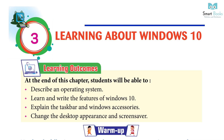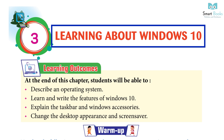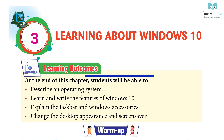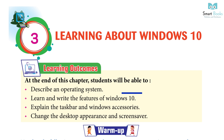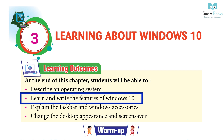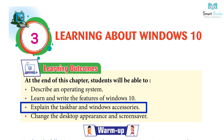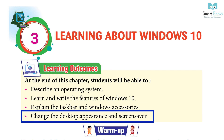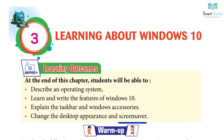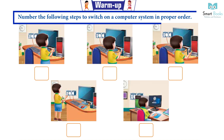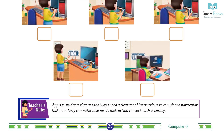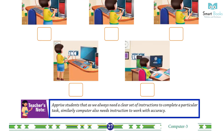Chapter 3: Learning About Windows 10. Learning outcomes: at the end of this chapter, students will be able to describe an operating system, learn and write the features of Windows 10, explain the taskbar and Windows accessories, and change the desktop appearance and screensaver. Warm-up: number the following steps to switch on a computer system in proper order.